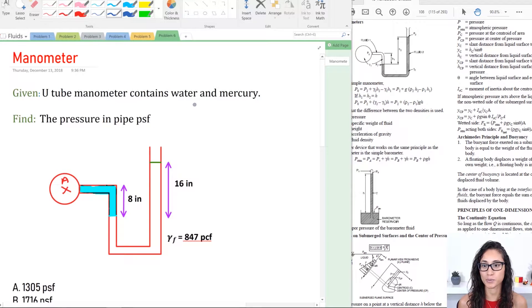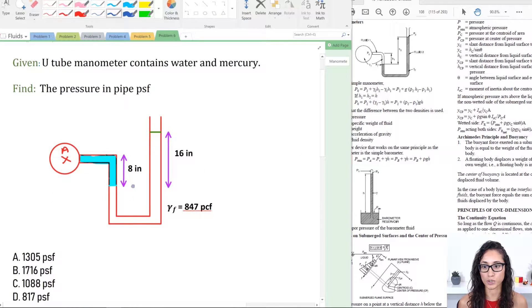Okay guys, so we have a manometer that contains water and mercury. So this is where the mercury is from this point up to here. This is open, so that means our pressure here is going to be zero and we need to calculate the pressure in PSF at this point A right here.